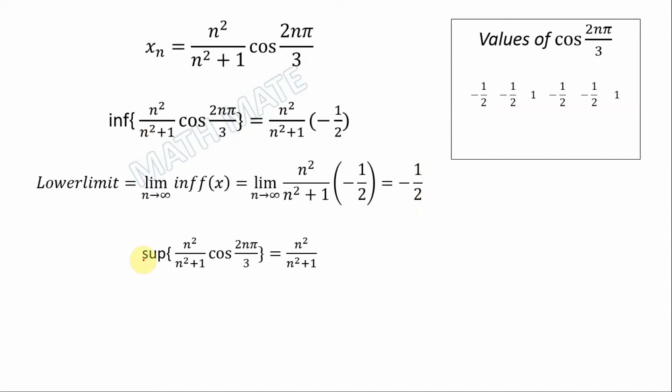For the upper limit, we do the same. In this case, we calculate the supremum of the expression. As we see here, 1 is the upper value of cosine, so we put 1 instead of cosine.